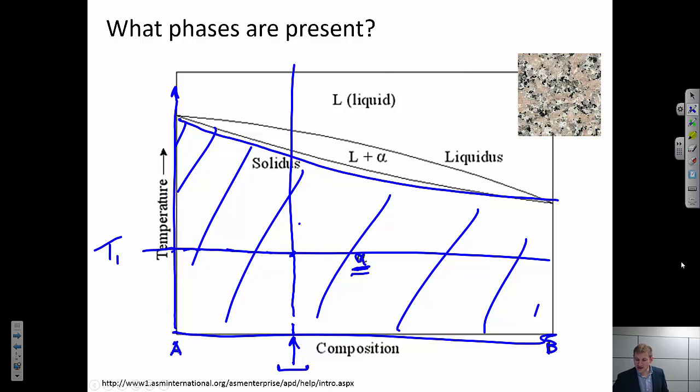What about if I heat it up? If I heat it up enough, so I'm way up here, let's call this T2, I'm in a different region. This is the liquid region. So again, there's only one phase present, and that phase is liquid. So I've heated up enough, the whole system is melted.